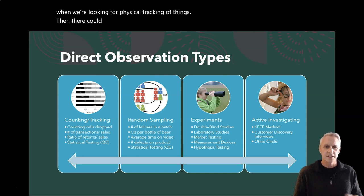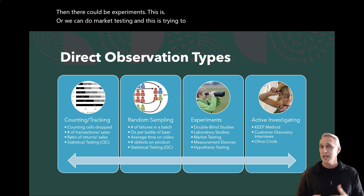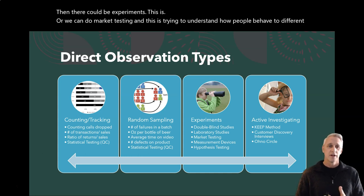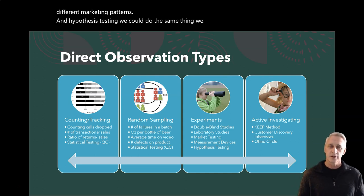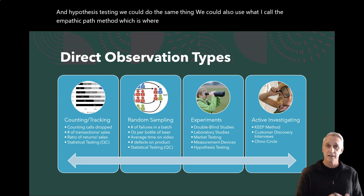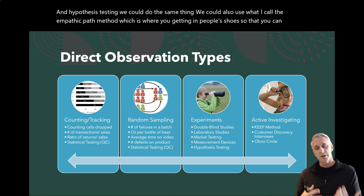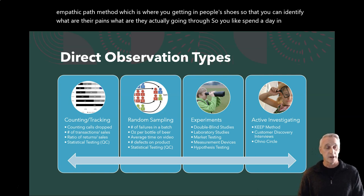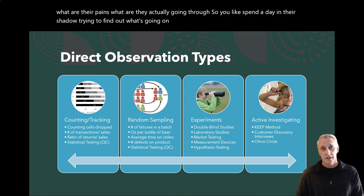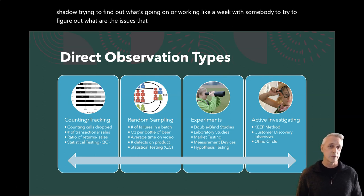Then there could be experiments. This is what we can do with market testing, trying to understand how people behave to different marketing patterns. And hypothesis testing — we can do the same thing. We can also use what I call the empathic path method, which is where you're actually getting in people's shoes to identify what their pains are, what they're actually going through. You spend a day in their shadow, or maybe a week with somebody, to figure out what issues they're experiencing in the workplace.